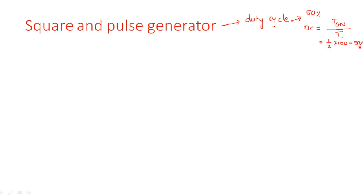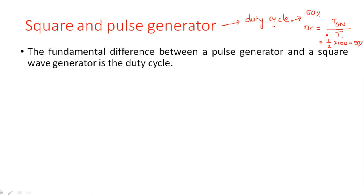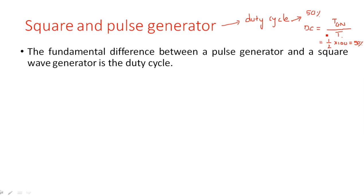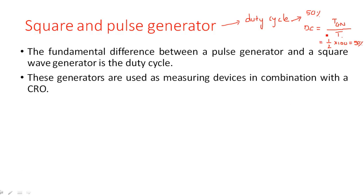If the duty cycle is other than 50 percent, then that type of waveform can be considered as a pulse waveform. So the fundamental difference between a pulse generator and a square waveform generator is the duty cycle.